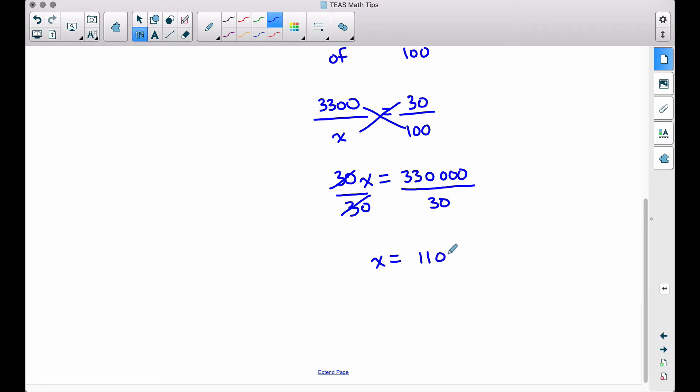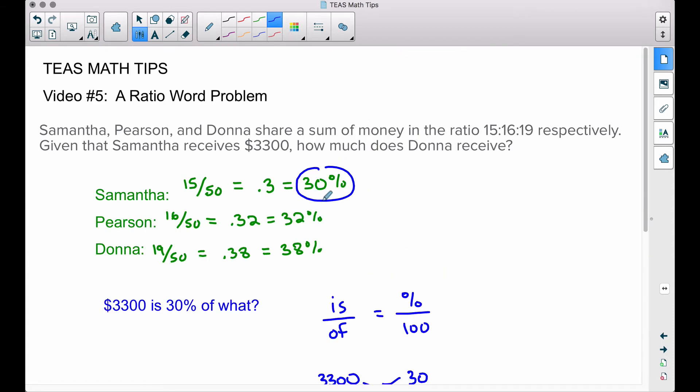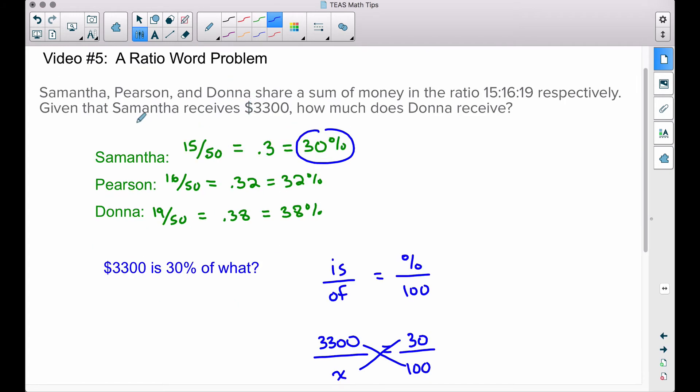Now what does this number represent? This represents the entire sum of money that is meant to be distributed to these three individuals. $11,000 is going to get broken up into parts and it's going to be given to Samantha, Pearson, and Donna.